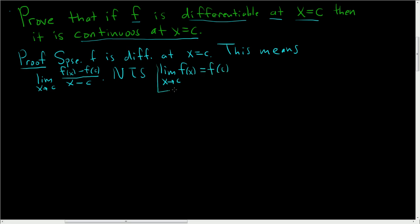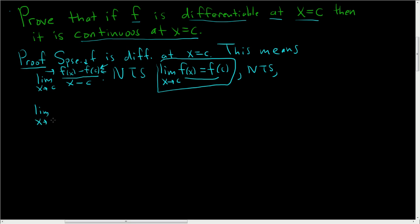If you look at the statement we have to prove and what we have over here, you'll notice that here we have f of x minus f of c. So it might be easier to show that the limit as x approaches c of f of x minus f of c is equal to 0.